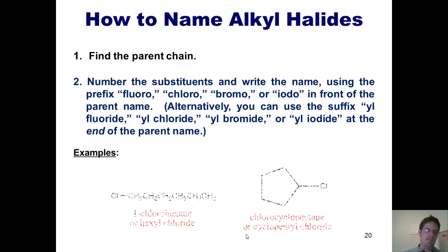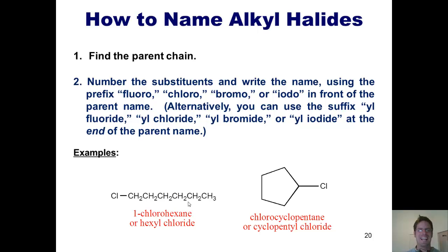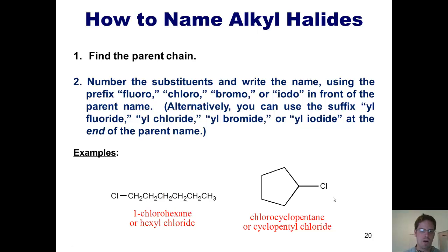Here are some examples. This molecule right here can be called, systematically, either 1-chlorohexane or hexyl chloride. Similarly, this molecule can be called chlorocyclopentane or cyclopentyl chloride.